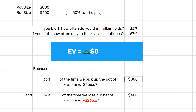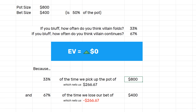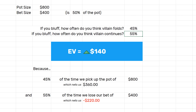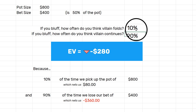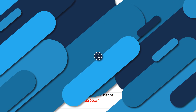Adding those together gives us exactly zero dollars, confirming that risking half pot with a one-third fold frequency is exactly break even. Of course, if the fold frequency or bet size changes, the numbers shift quickly. If our opponent folds 45% of the time, that's a very positive +$140. If they only fold 10% of the time, that's very negative. But at exactly one third, it is precisely zero EV — break even.